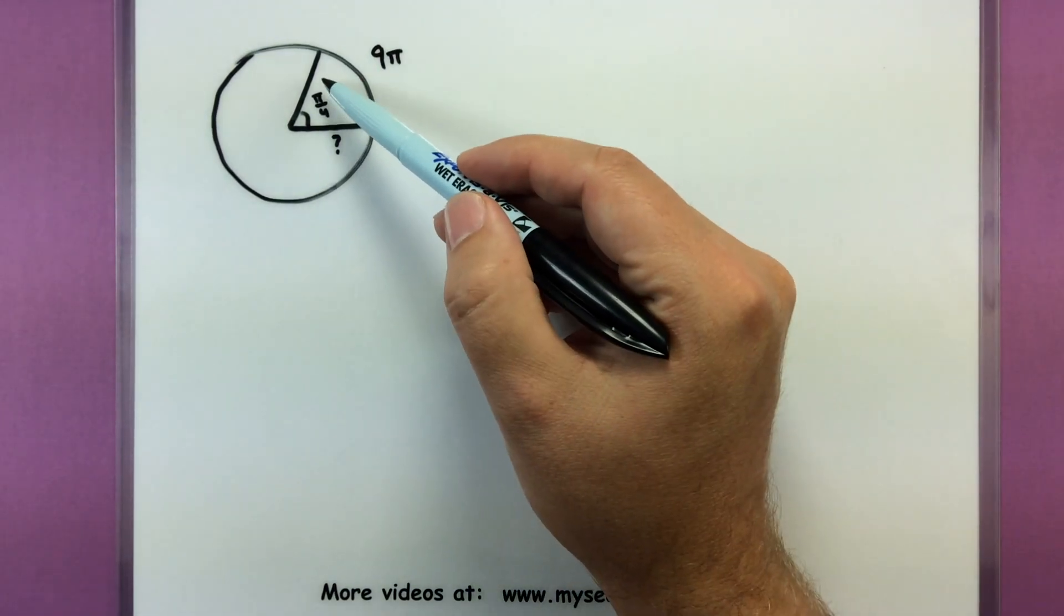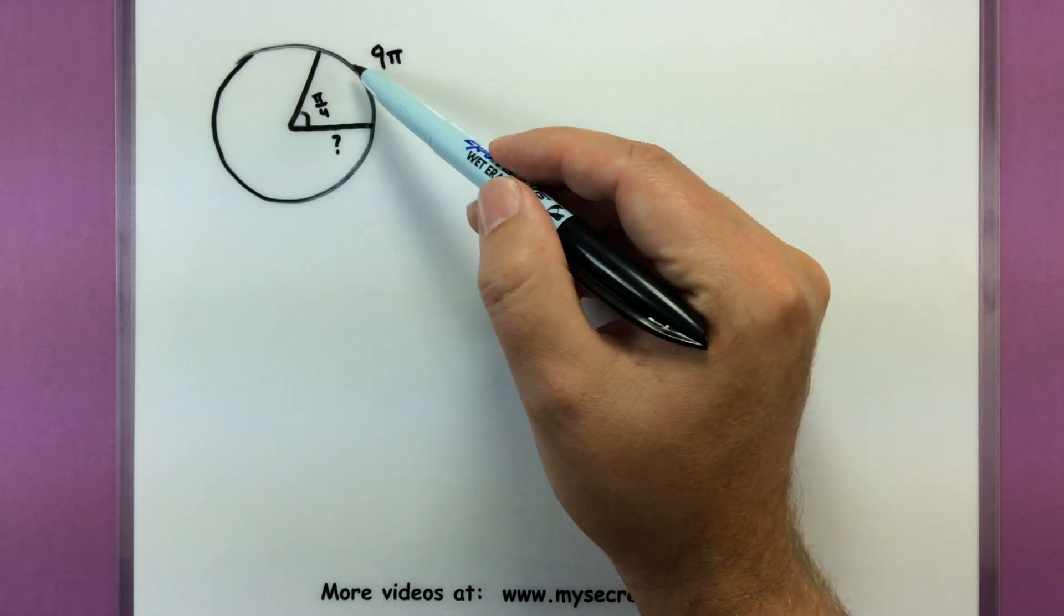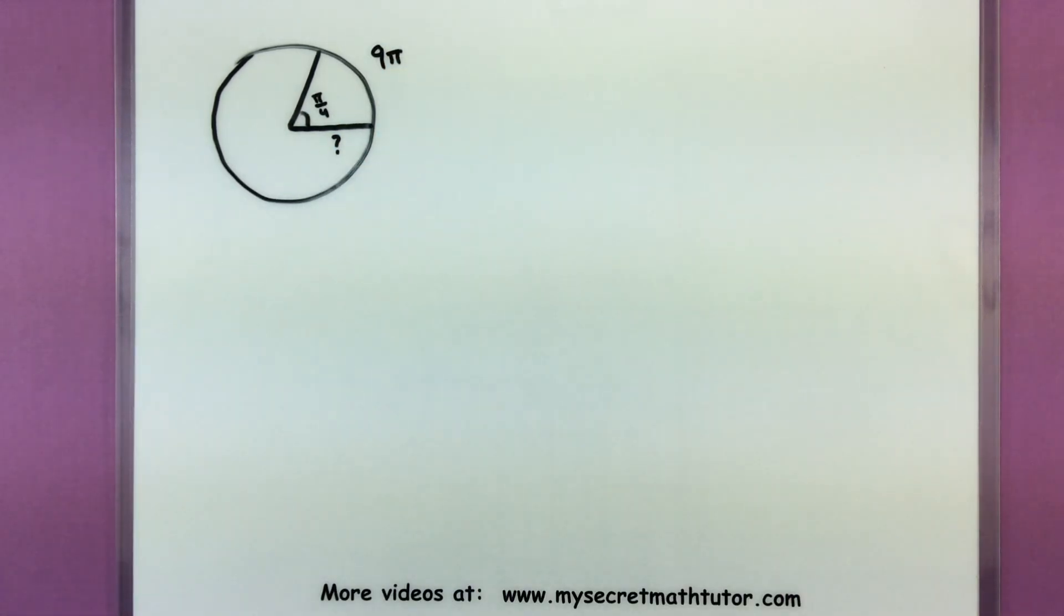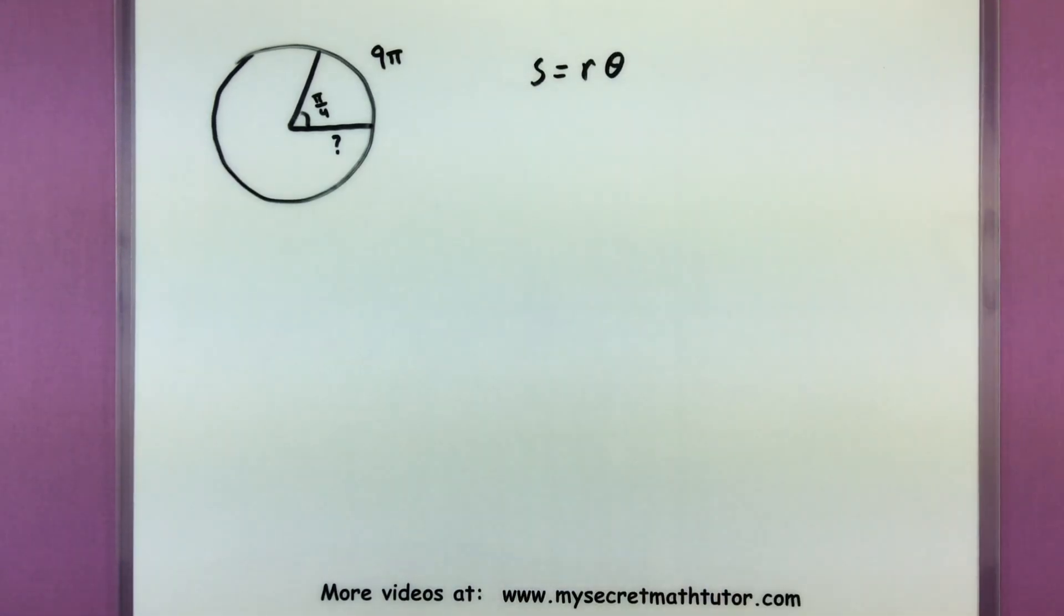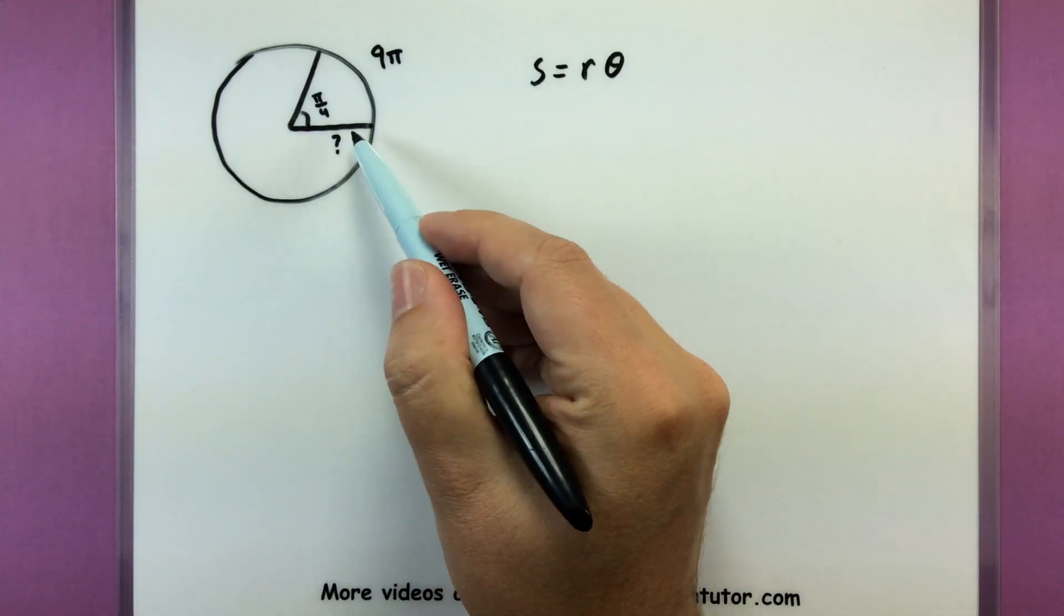Here I have a very similar problem. I have an angle in the circle and I know the arc length. But this time, I don't know the radius. That's not a problem. We'll still use the same formula, arc length equals radius times angle, to find our missing radius.